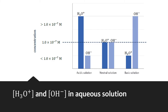This confirms the diagram: in an acidic aqueous solution, there is a much greater amount of hydronium ion compared to hydroxide ion. The hydroxide ion is present because of the self-ionization of water, but its amount is very small.